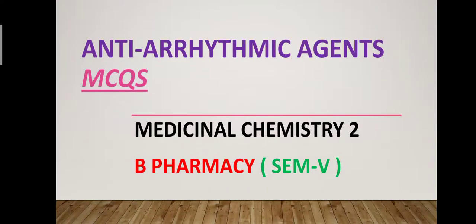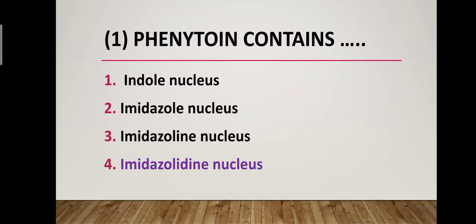Hi friends, welcome to our YouTube channel One and Only Pharmacy. In today's lecture we discuss MCQs on antiarrhythmic agents or antiarrhythmic drugs, subject Medicinal Chemistry, Second B Pharmacy Semester Fifth. Please watch this video till the end. Let's start one by one. Question number one: Phenytoin drug contains which molecule or which ring in its structure?